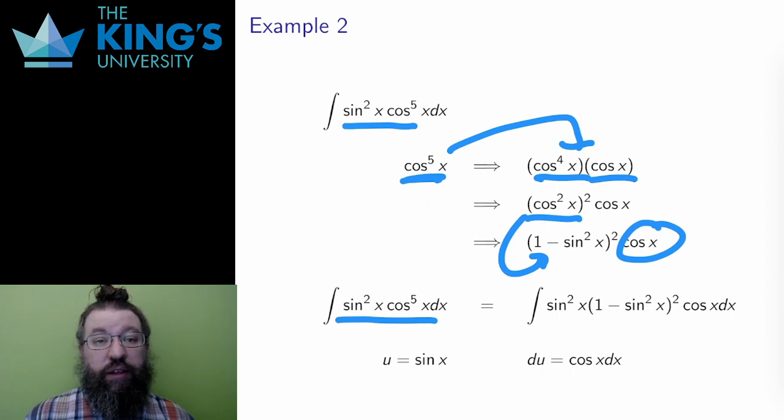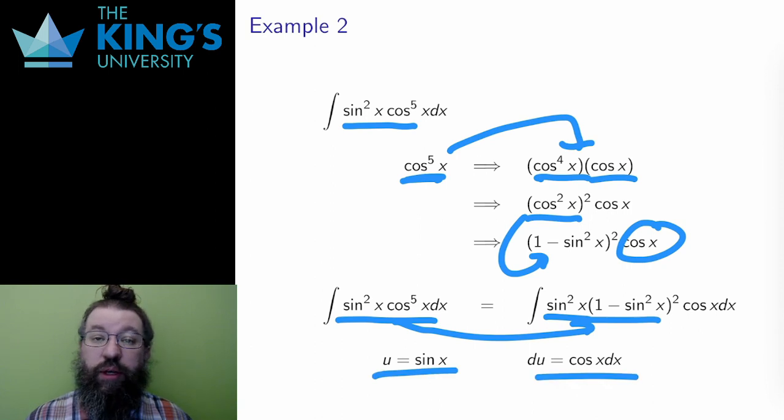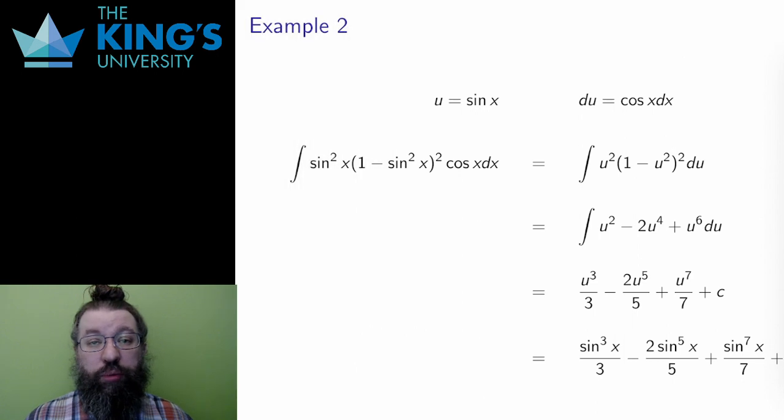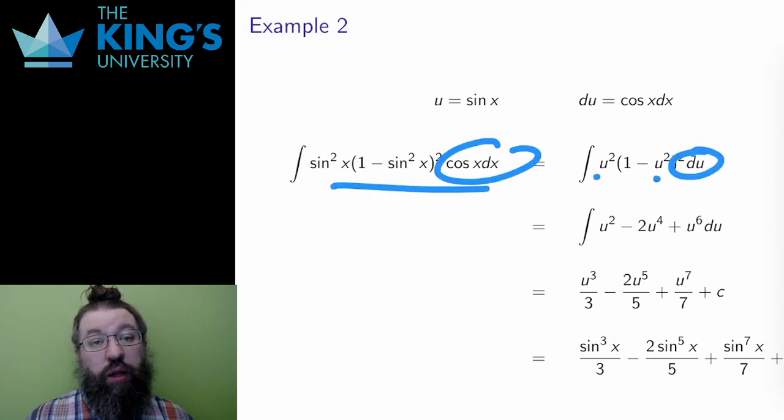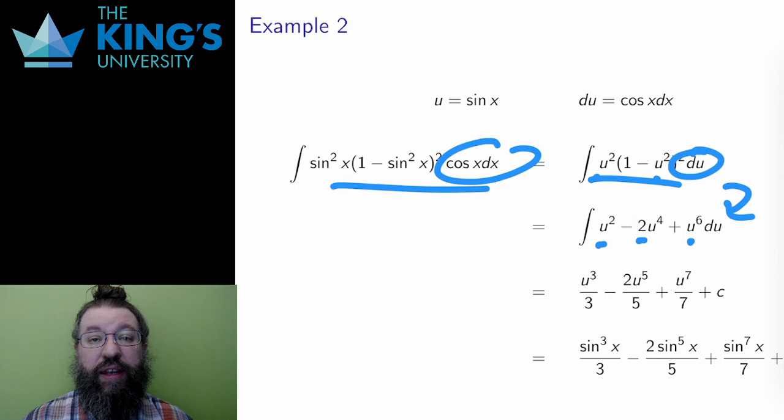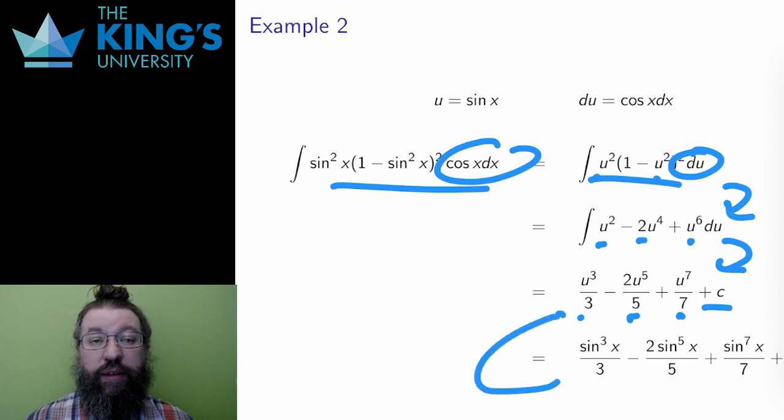Now I get back to the integral. With only 1 cosine remaining, a substitution u equals sine x with du equals cos x dx works very well. I replace all the sine terms with u and the cos x dx with du. And the result is a polynomial integral, which I know how to do. I expand the binomial, and multiply in the u squared, and then integrate each of the three pieces using linearity, adding the constant of integration of course. At the end, I reverse the substitution to get the final antiderivative.